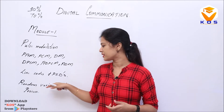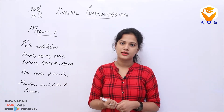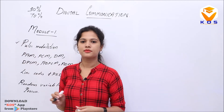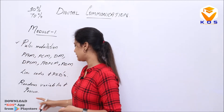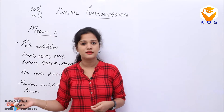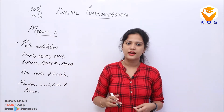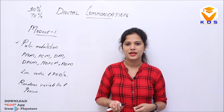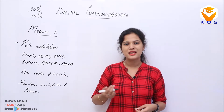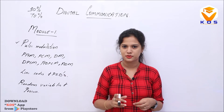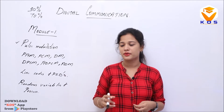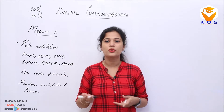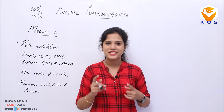We are going to talk about random variables and random processes. This section covers continuous random variables, discrete random variables, mean, expectation, variance, and parameters. We will also cover what is a random process, what is a stationary process, autocorrelation, and power spectral density.